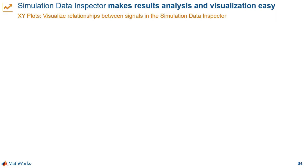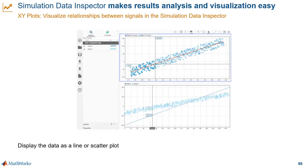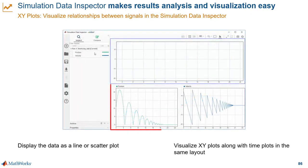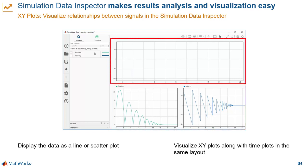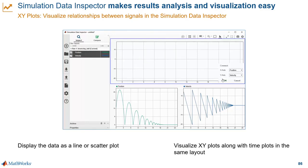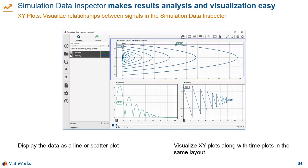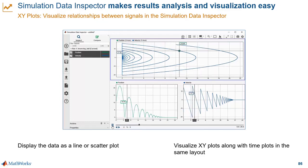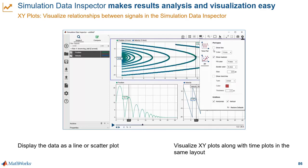What if you need to plot a signal against another to understand the relationship? That's where XY plots are helpful. You have the flexibility to visualize these XY plots as lines or scatters. The plots at the bottom show the position and velocity of a bouncing ball over time, and at the top we're going to visualize velocity and position as an XY plot. We configure that plot area and then drag and drop the signals. Starting in R2019a, you can visualize multiple XY series in the same XY plot. You can replay the data without rerunning the simulation and add trend lines to these XY plots.